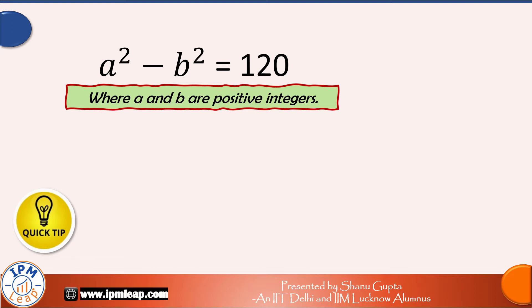So a square minus b square is equal to 120 and we need positive integral solutions for this equation which means a and b can only take values such as 1, 2, 3, 15, 18, etc. that you can count on your fingertips, right?